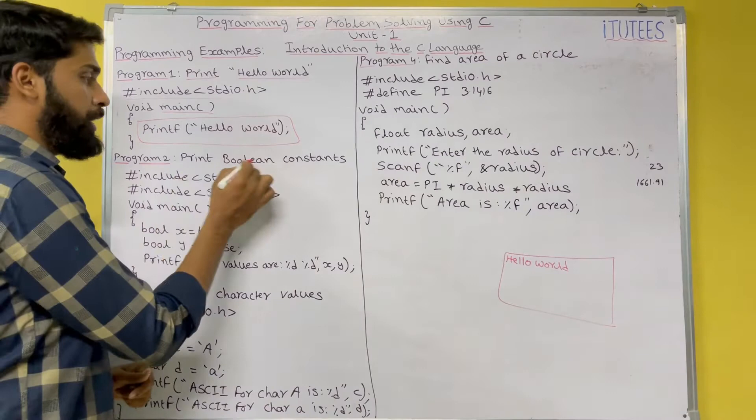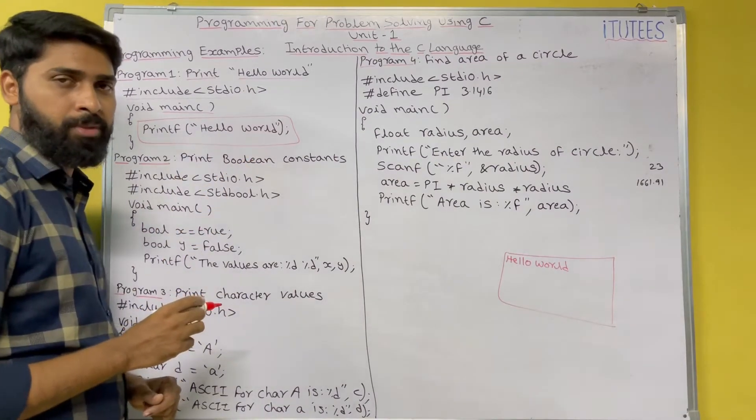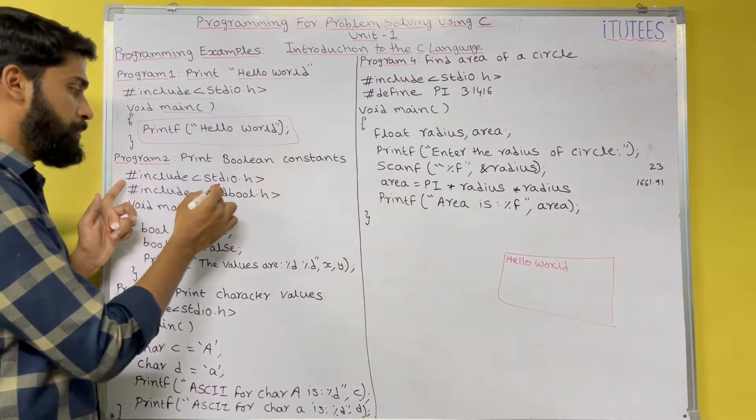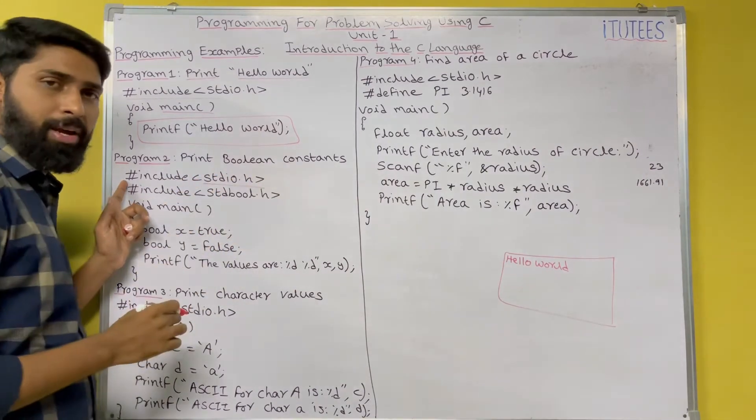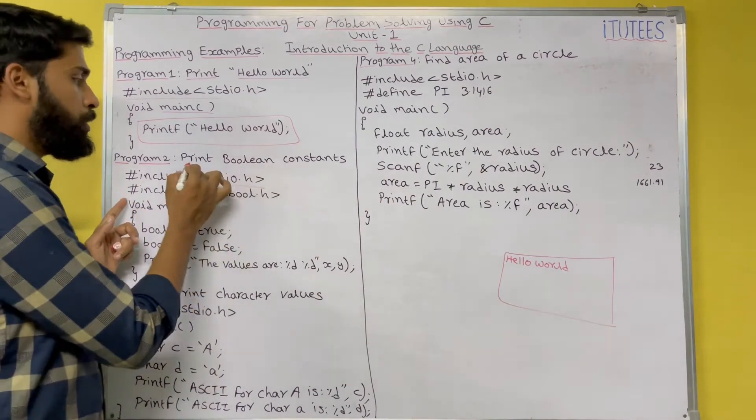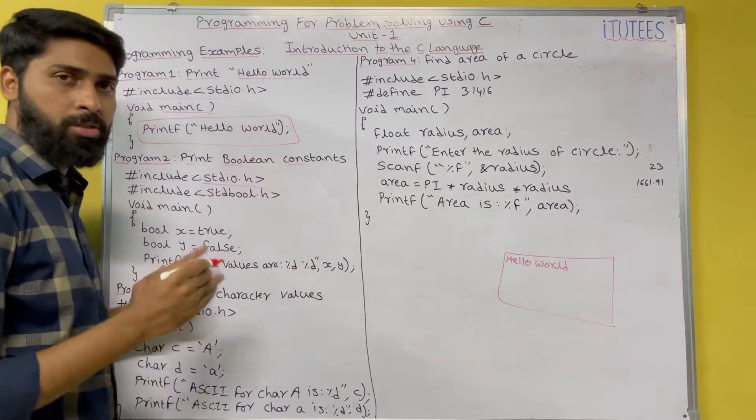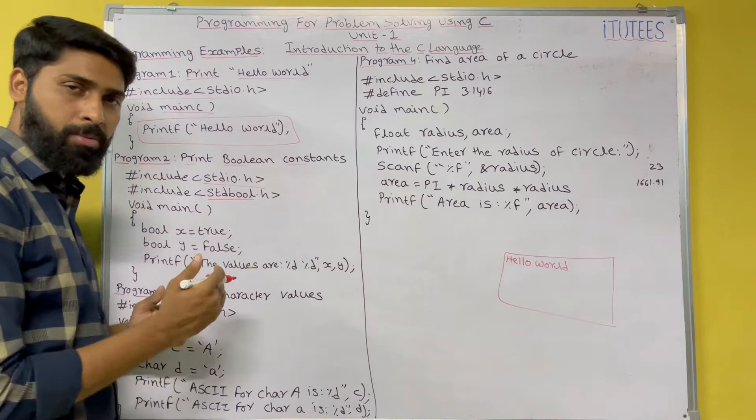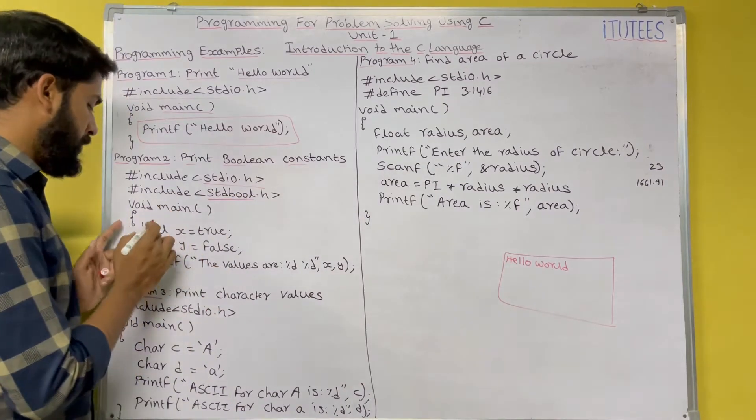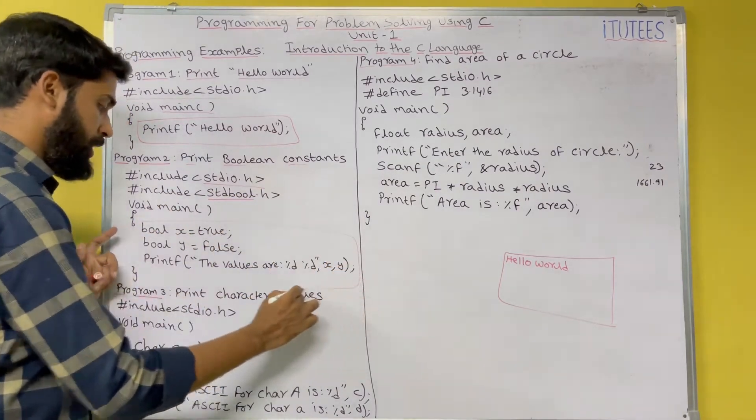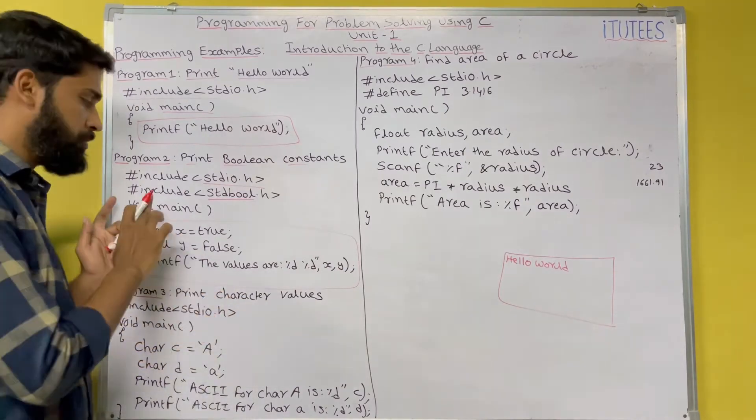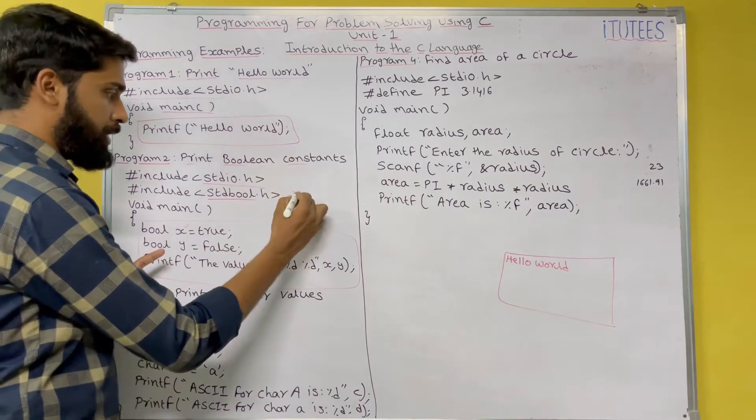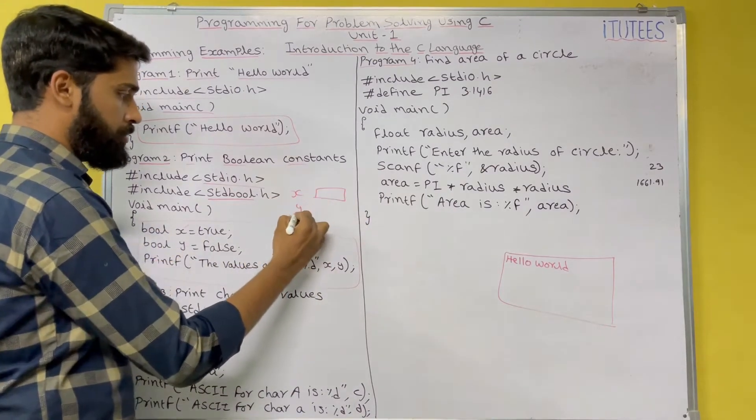Second program: Print Boolean Constants. Similarly to the first program, every C program starts with header file. Here, you are going to process some Boolean constants. So you are going to include stdbool.h. That means a Boolean header. You can write your code in main function. The main function structure is void main. You are going to declare two variables. One is x, another one is y.